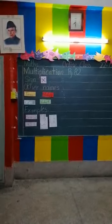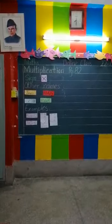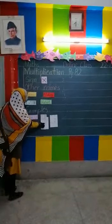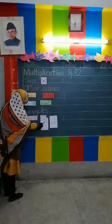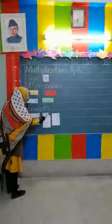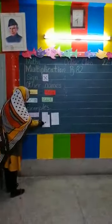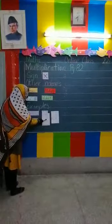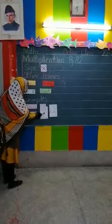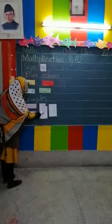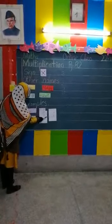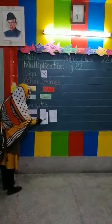But अब हमने question के form में इसको करना है. हमारे पास digit आता है इस form में — this is called the vertical form. The first digit is on top and the second is beneath. अब हम इन दोनों में कोई भी table पढ़ सकते हैं: 2 का table 5 तक पढ़ सकते हैं, या 5 का table 2 तक पढ़ सकते हैं.